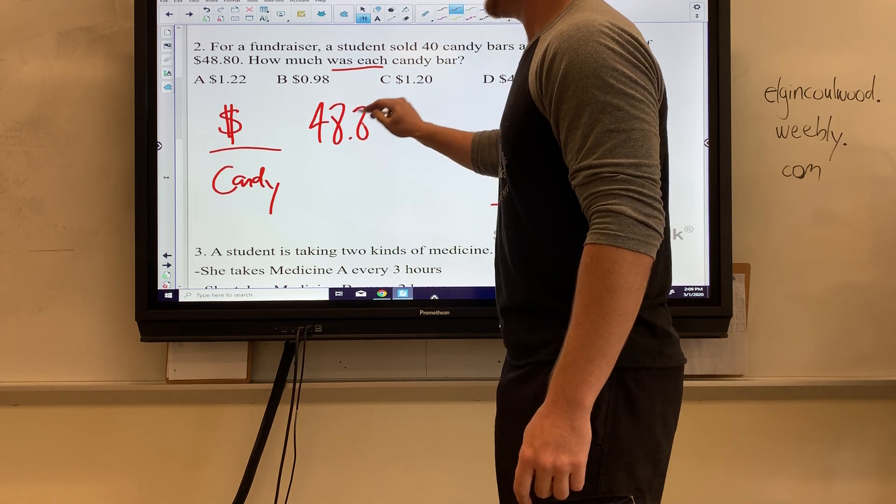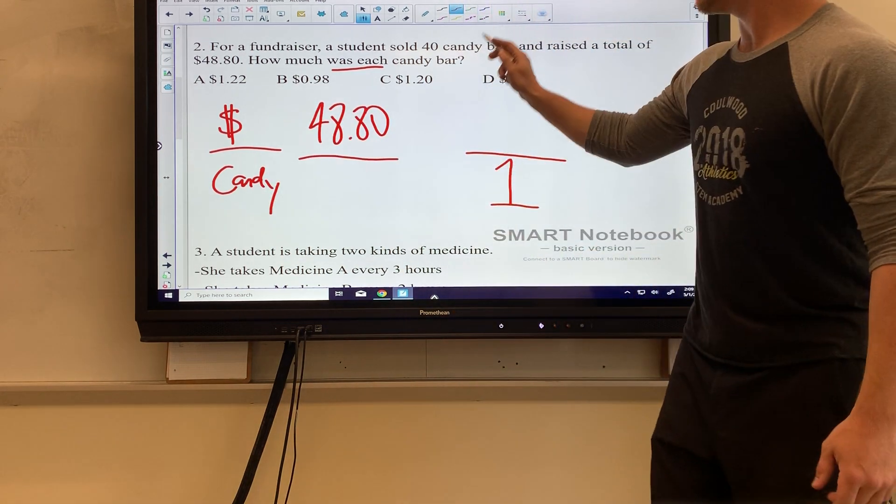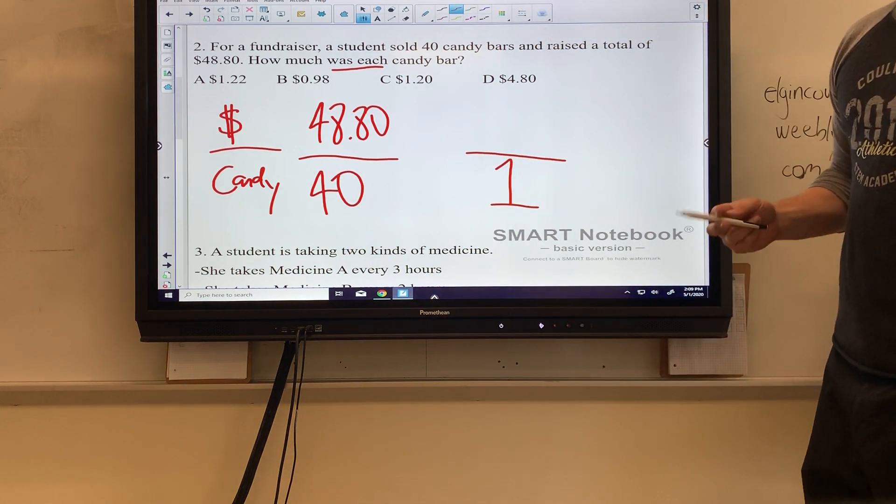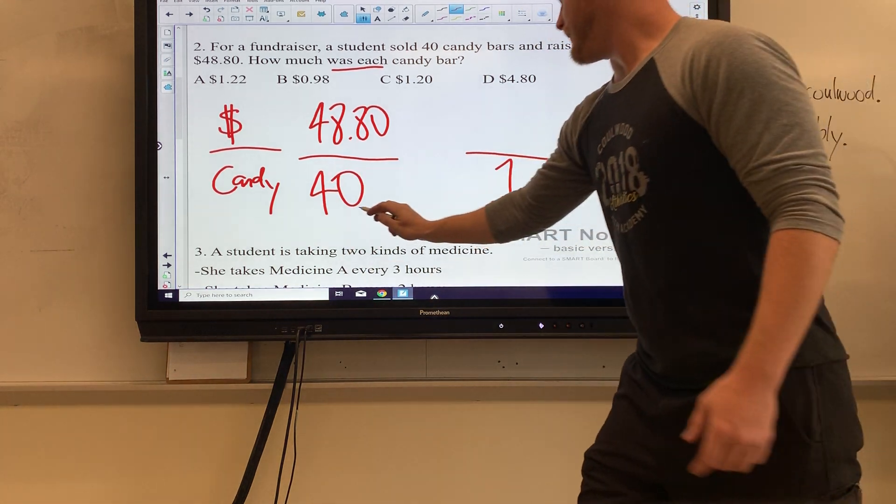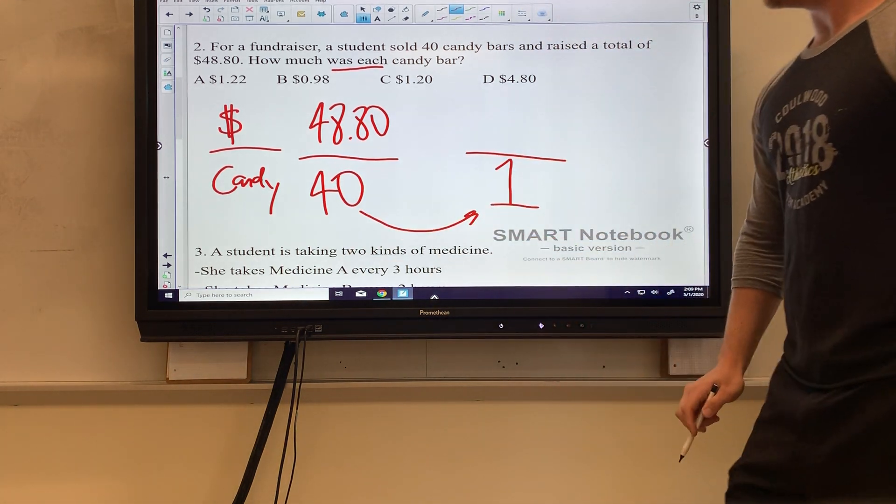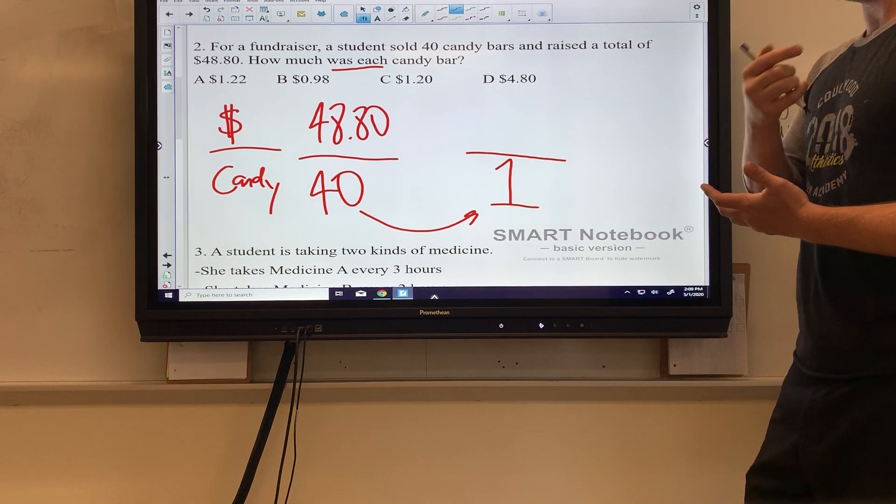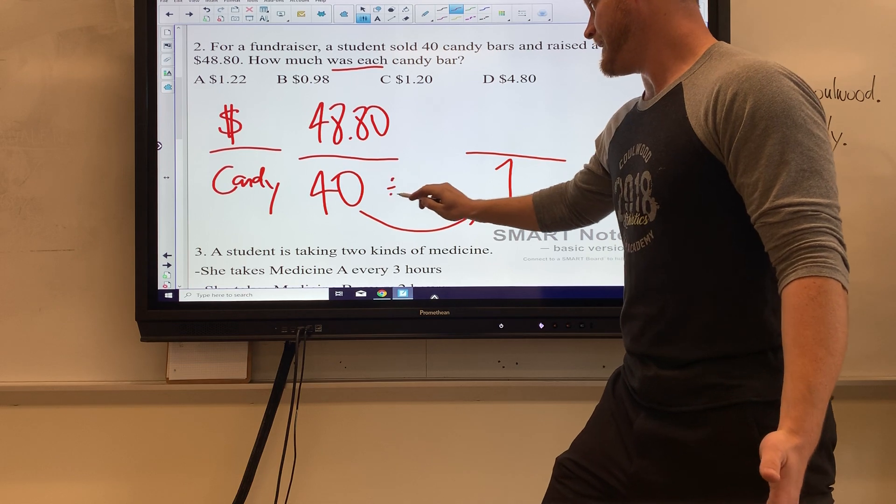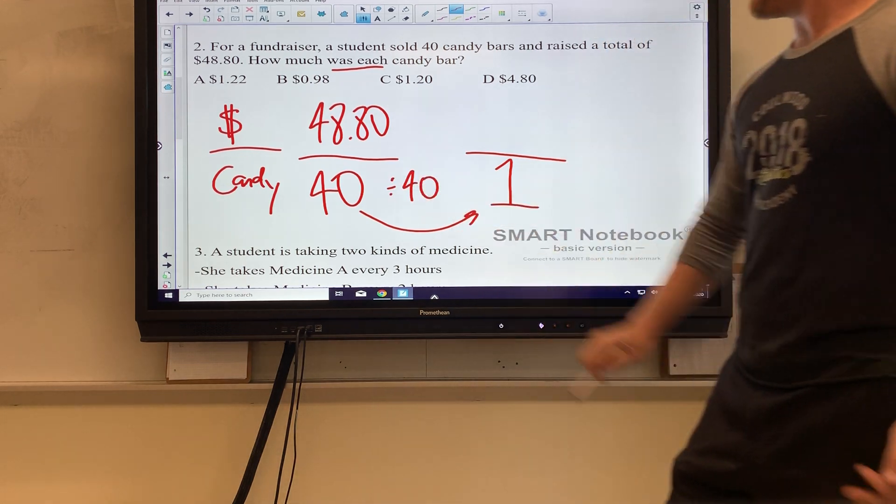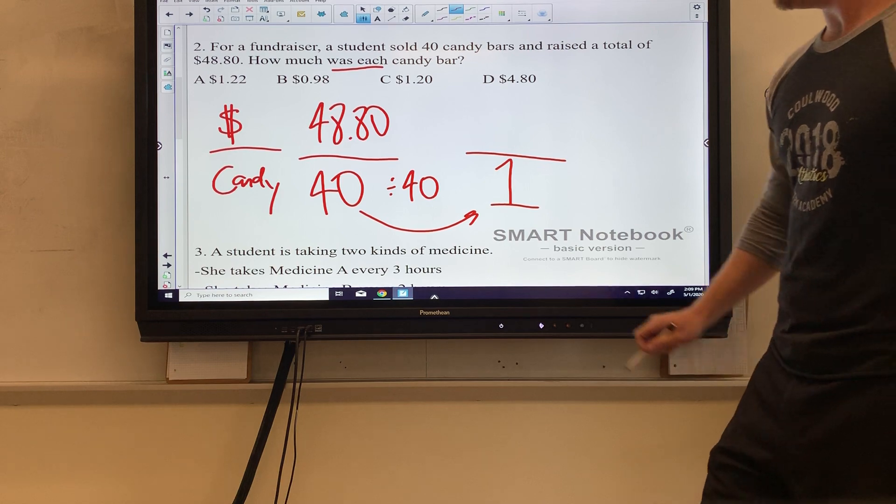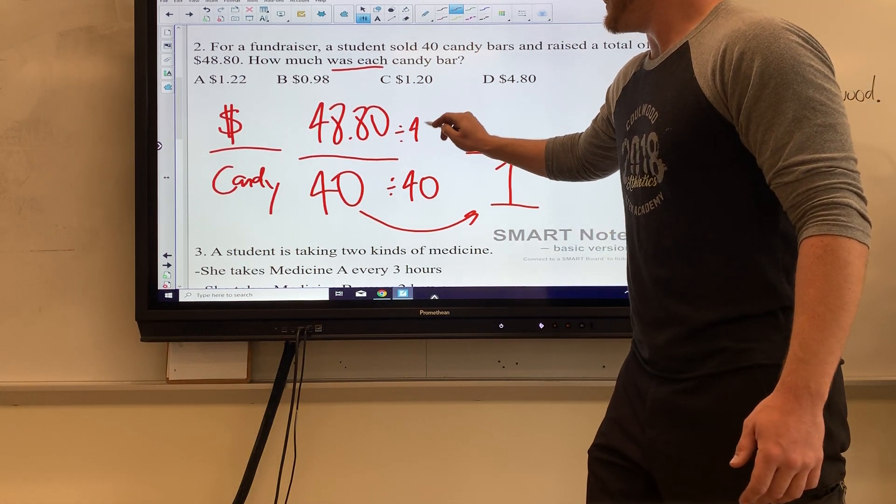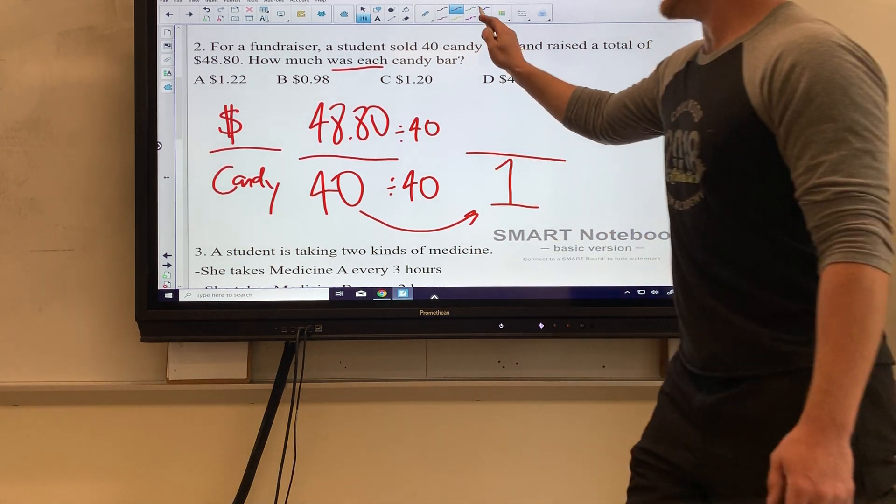Well, how much money? It's 48 dollars and 80 cents. How many candy bars? 40 of them. Now the easy part: we've got to go from 40 to 1. To get down to 1, we just divide a number by itself. So 40 divided by 40 is 1, and what I do to the top, do to the bottom.